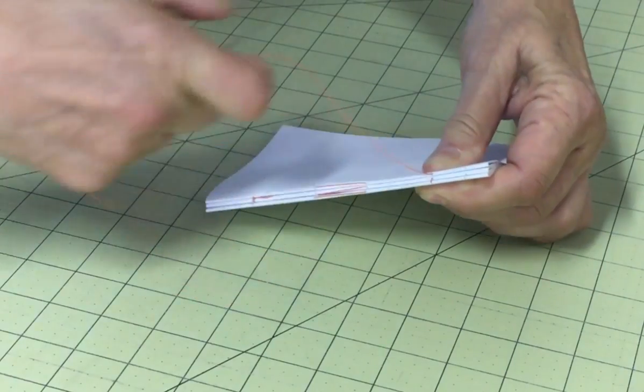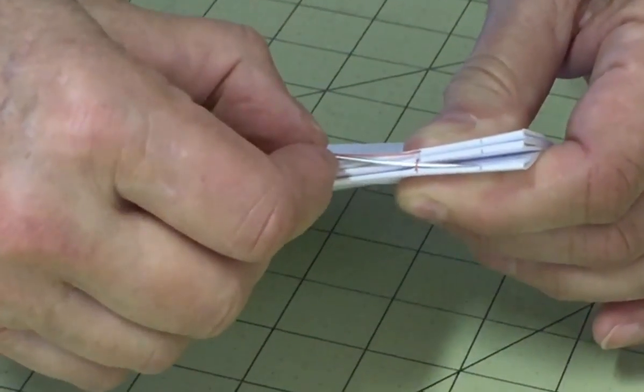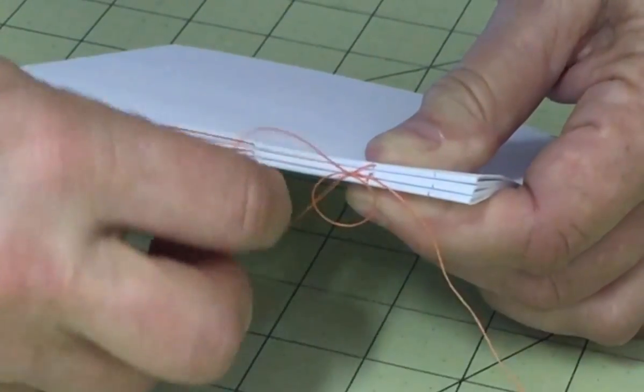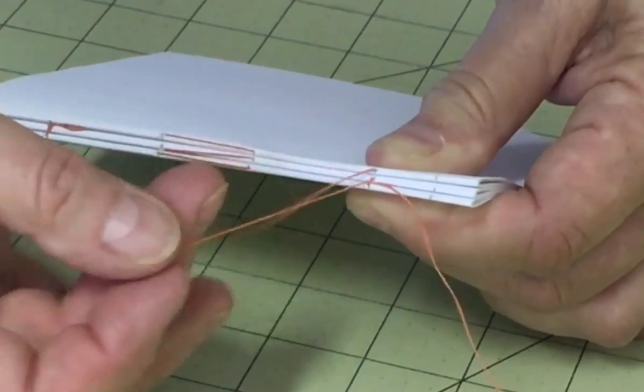Pinch the signatures together to keep them from loosening up and pass the needle under the stitch between the first two signatures, going from the inside to the outside. Pull the thread until you have a small loop left behind.